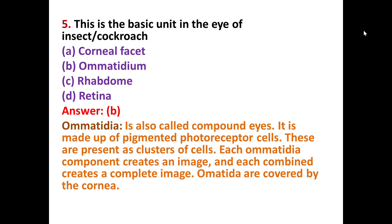MCQ number five: what is the basic unit of the eye in insects or cockroaches? The options are a) corneal facet, b) ommatidium, c) rhabdom, d) retina. The correct answer is B — ommatidium. Ommatidium refers to compound eyes, which have many lenses and are made up of pigmented photoreceptor cells. Each ommatidium creates an individual image, and all images combine to form a final composite image.